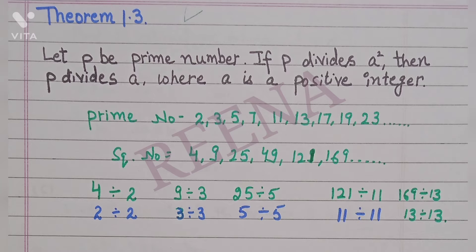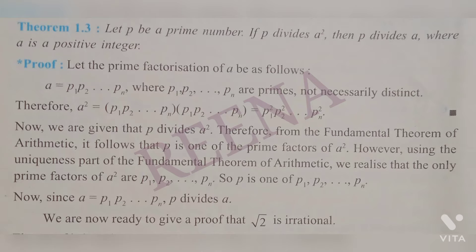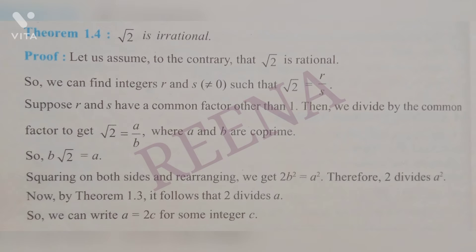On the screen I have some prime numbers and their square numbers. If a number is divisible by the square number, then that number is also divisible by the prime number. For example, 4 is divisible by 2, and 2 is also divisible by 2; if 9 is divisible by 3, so 3 is also divisible by 3. The same concept is given in Theorem 1.3: if p divides a², then p divides a, where a is a positive integer.